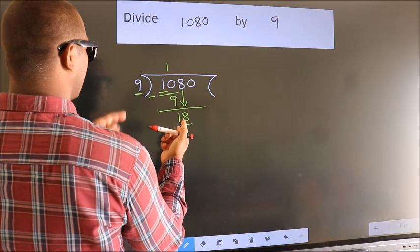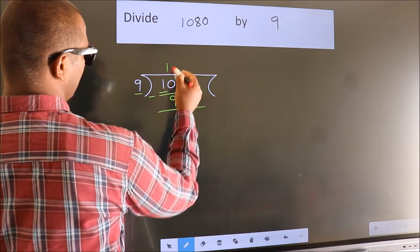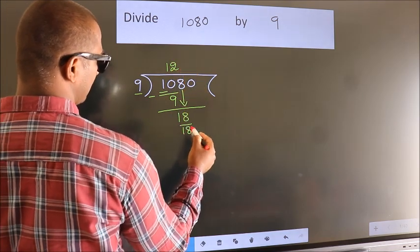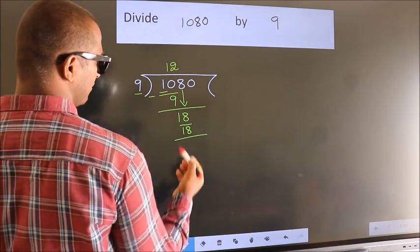When do we get 18? In the 9 table, 9 twos is 18. Now we subtract.